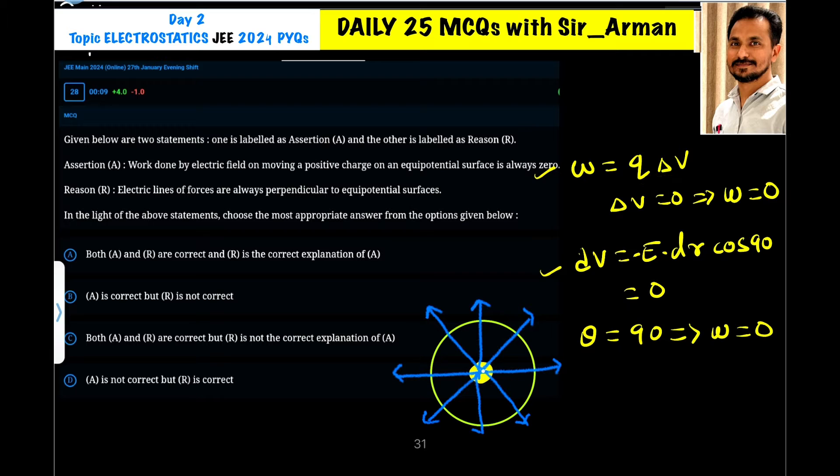Now, if here charge is located at the center of this sphere, then at this point, the electric potential is given by KQ by R, where R is the radius of this sphere. Then at all this point, the electric potential is same.